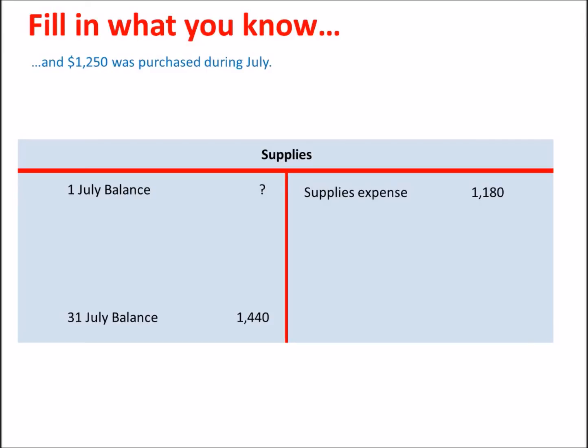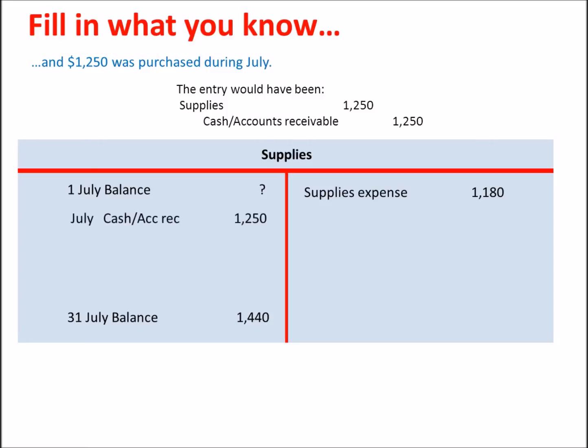We're also told that $1,250 worth of supplies was purchased during July. The entry to record that would have been to debit supplies and credit cash or accounts receivable. So we'll post that debit to the supplies account.